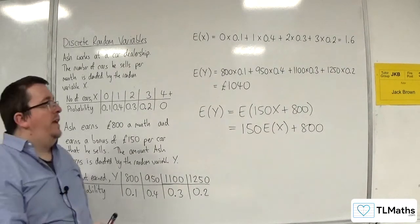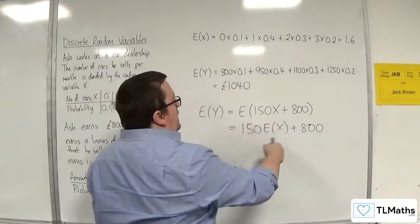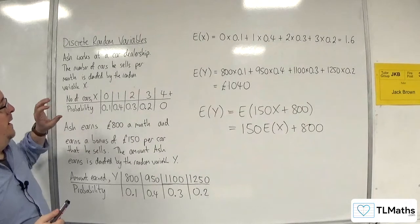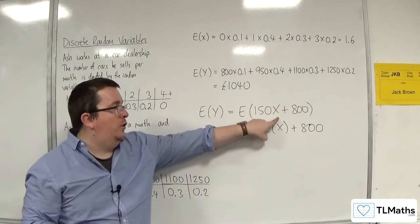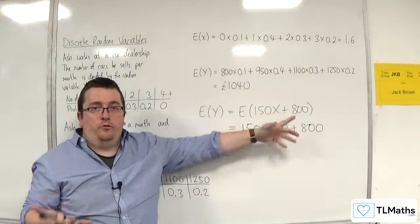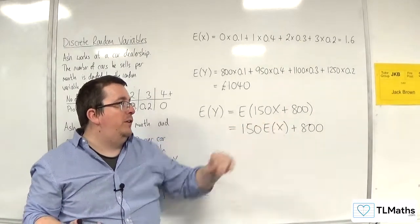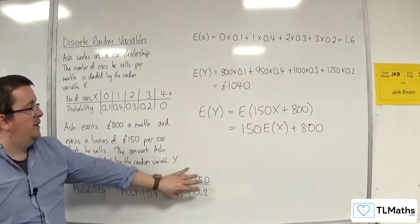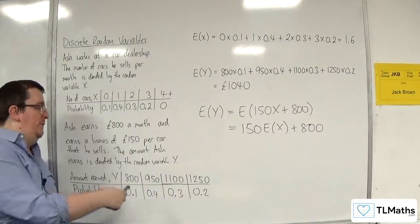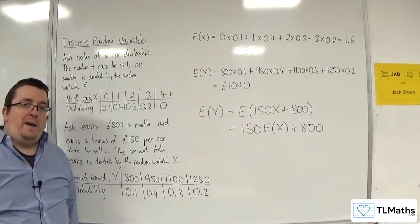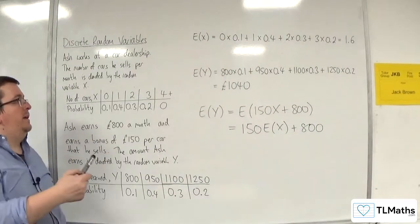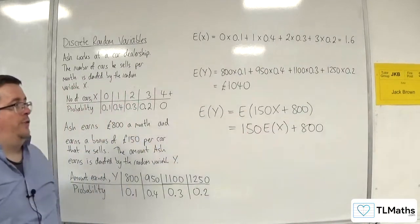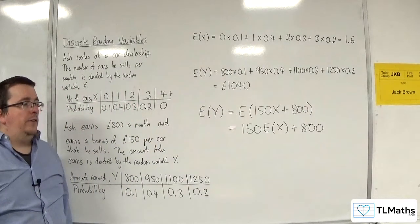So, this is a very convenient result that will allow us to go straight from E of X to E of 150X plus 800, for example, or E of AX plus B, without having to construct the new distribution and then have to work out the expected value of that one. We'll be able to go straight from E of X straight to 1040 in a single step.